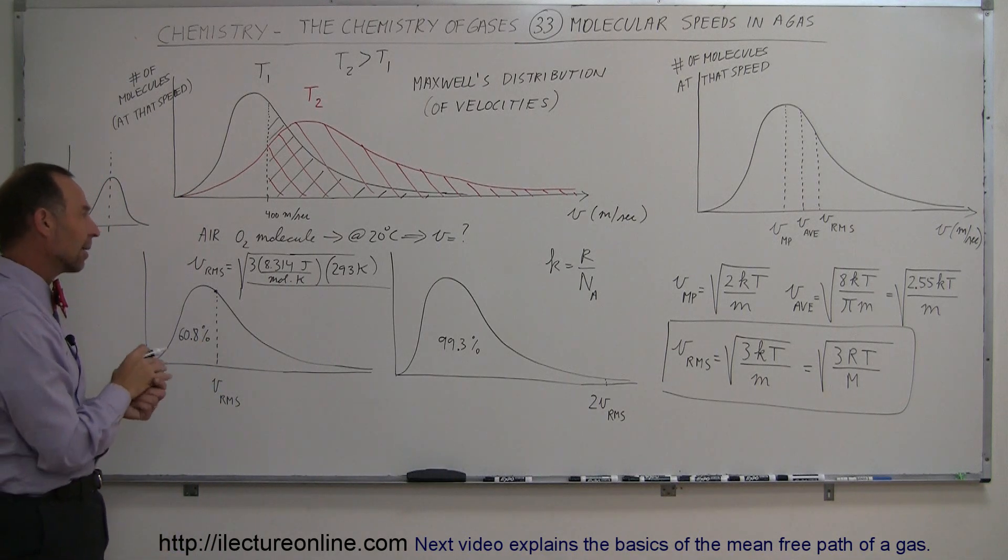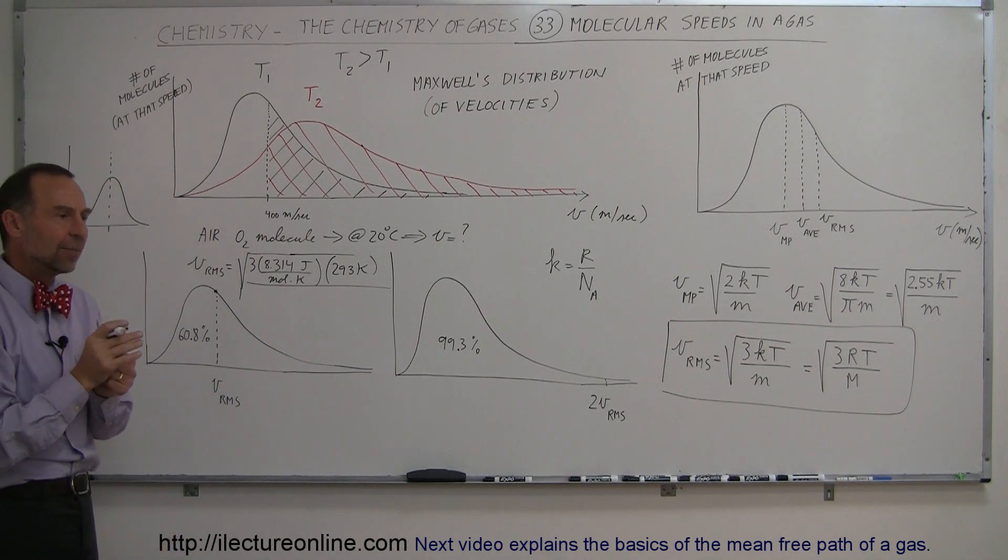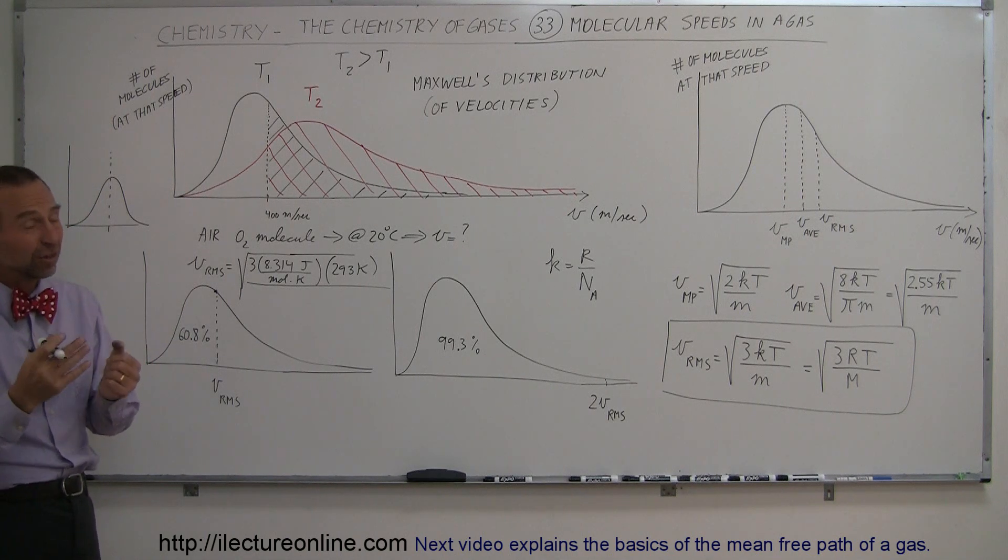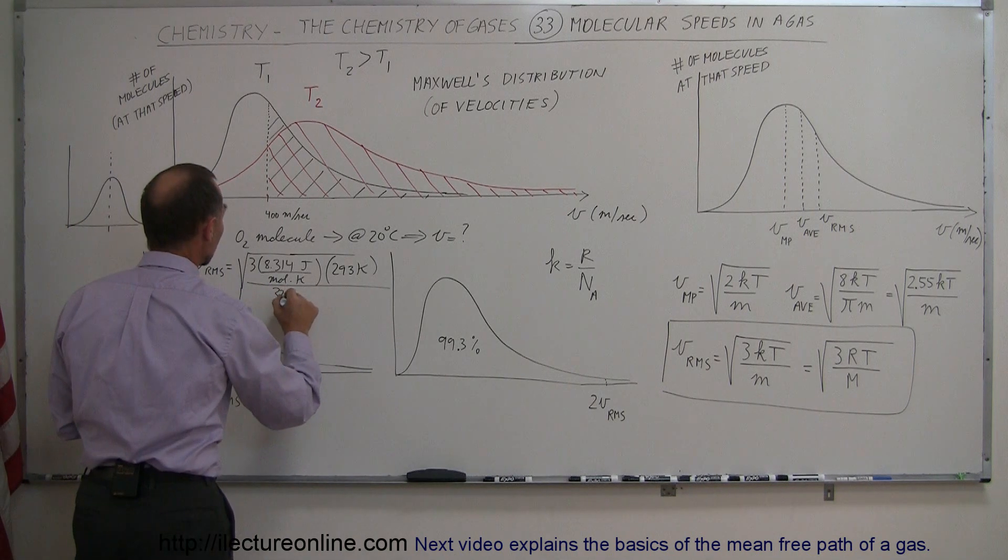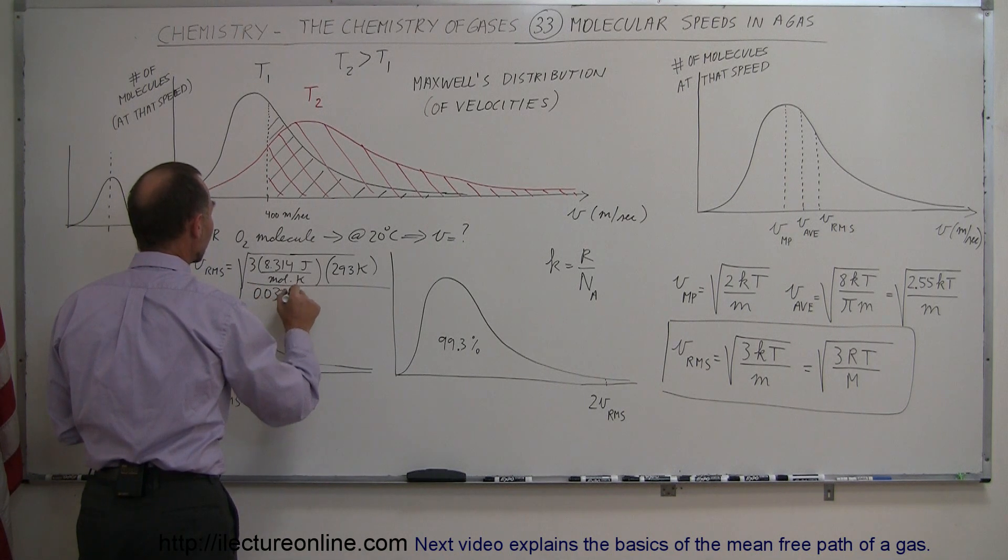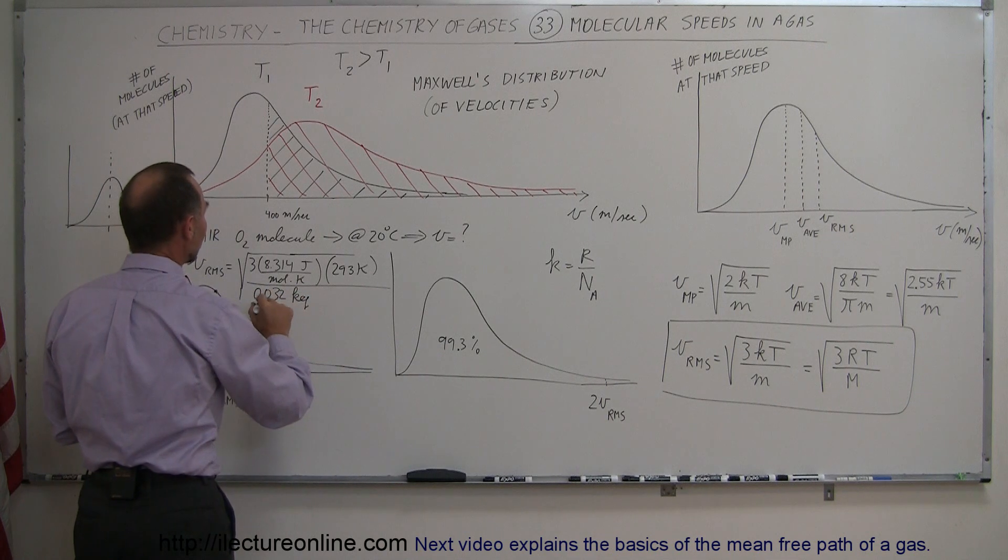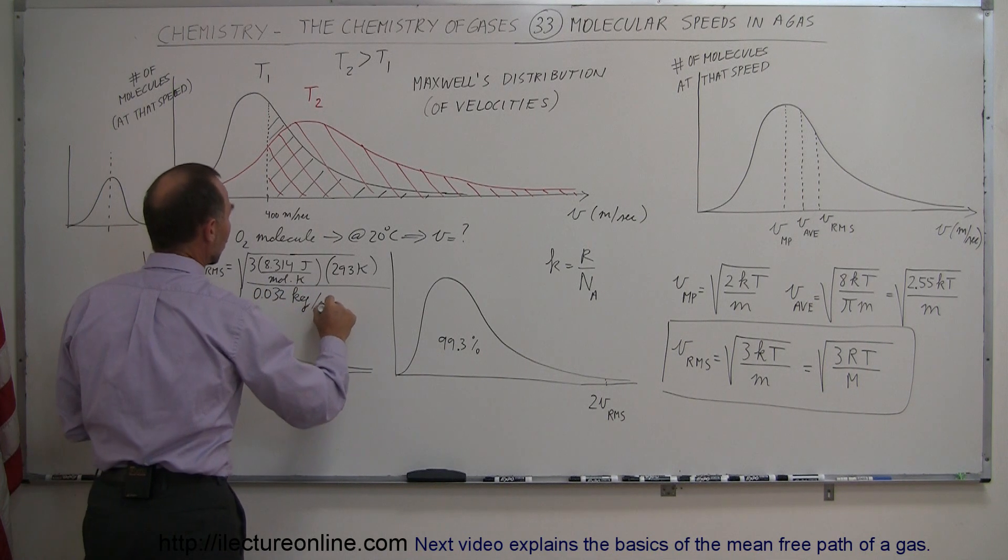Now it's a diatomic molecule. Each atom has a molar mass of 16 grams times 2, that would be 32 grams, converted to kilograms, so that would be 0.032 kilograms per mole.